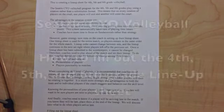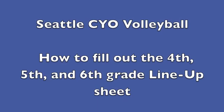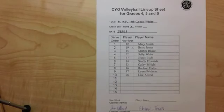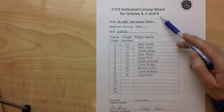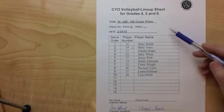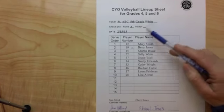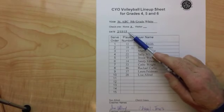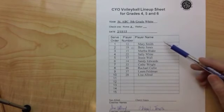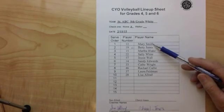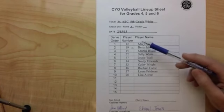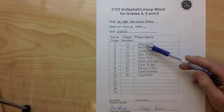Filling out the lineup sheet. Lineup sheets can be downloaded from the CYO website. Be sure to choose the one that is for 4th through 6th grades. First, enter the team name. Check home or visitor — this will be on your schedule. Enter the date. List players in the order they will be serving, starting with the first server and working down your list of players. Be sure to enter the player's jersey number and their first and last names.